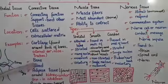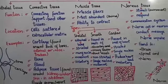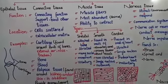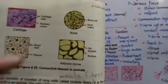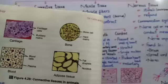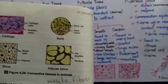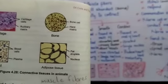Next, connective tissue is present in the bones. As you will see the bone structure in your book page number 76. In the bone structure, you will see the bone cells and a hard matrix. So this is the connective tissue.